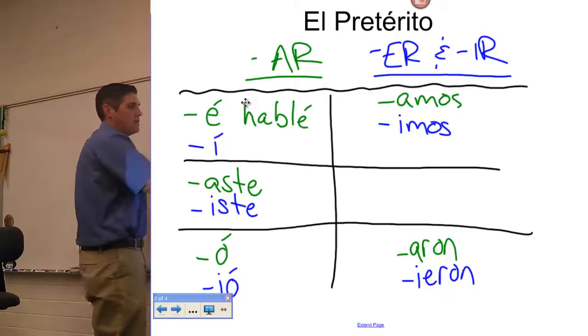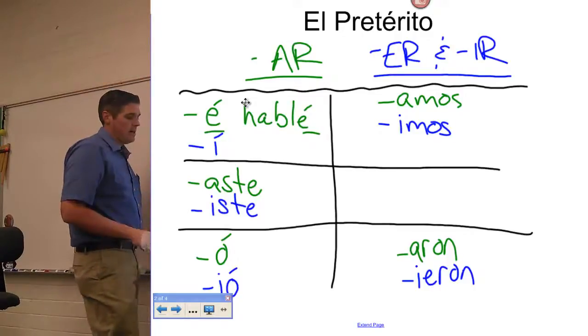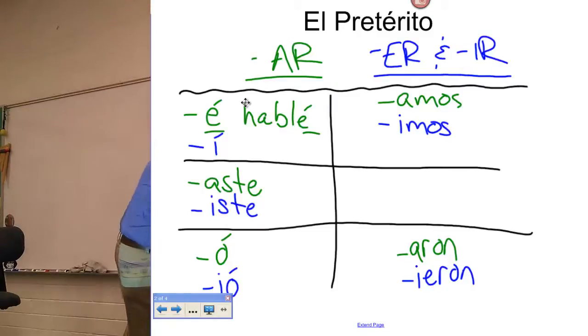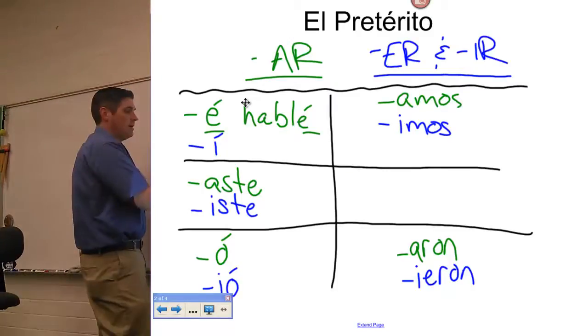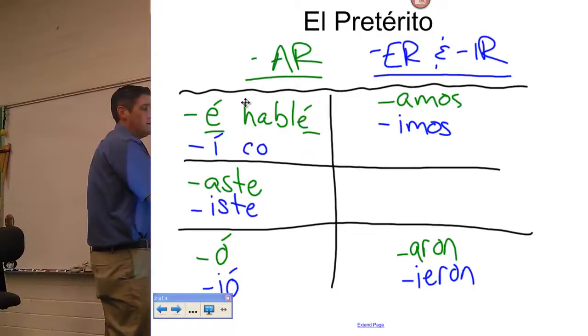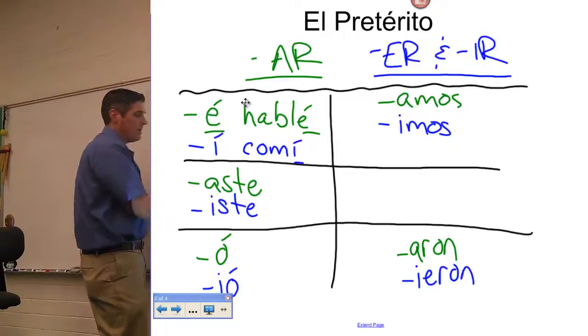There's your ending, what we see there. And if you have an ER or IR verb like comer, it would be ayer comí pollo con arroz. Comí.